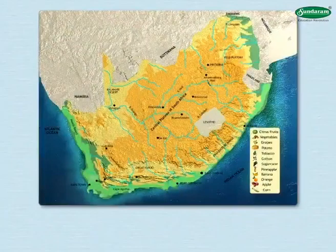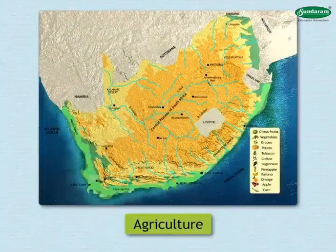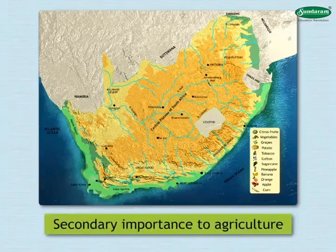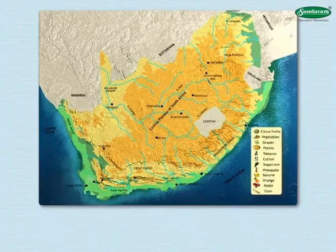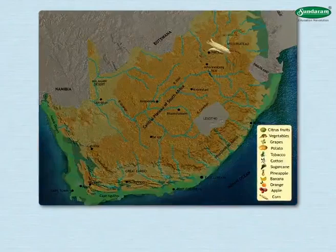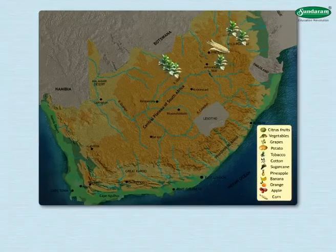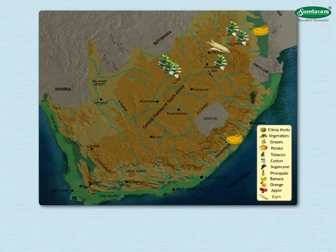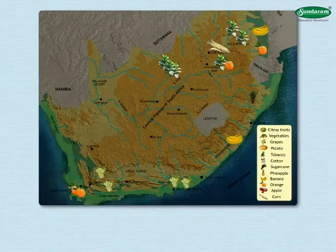Let us see the occupations carried out in this country. Agriculture has secondary importance and its proportion is also less. On the Veld Plateau, crops like corn and tobacco are cultivated. In Natal province, sugarcane and bananas are grown, and elsewhere we find fruit gardens with grapes, oranges, pineapples, etc.